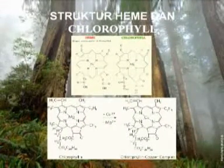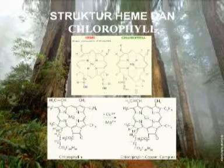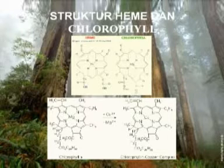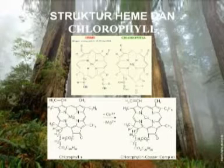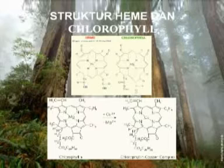Tahun 1855, seorang ilmuwan bernama Ferdel menemukan kemiripan struktur hem dan klorofil. Perbedaannya adalah pada pusat cincin porfirin, di mana pada pusat cincin porfirin klorofil berupa atom magnesium, sedangkan pada hem adalah atom Fe atau besi.